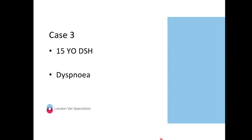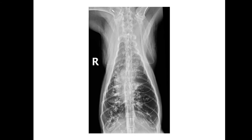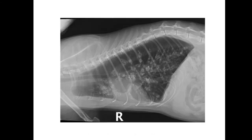Case number three is a little bit different — it's a 15-year-old domestic short-hair that's presented as dyspneic. A couple of radiographs to look at: we've got a VD and a right lateral thorax. Would anybody like to have a go at case number three? I can have a go. We have two radiographic projections of a skeletally mature cat — one is a right lateral and the other is a DV.